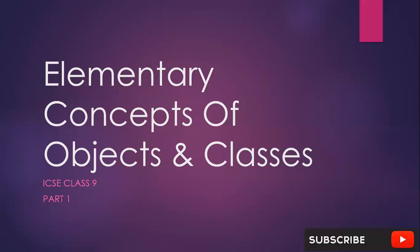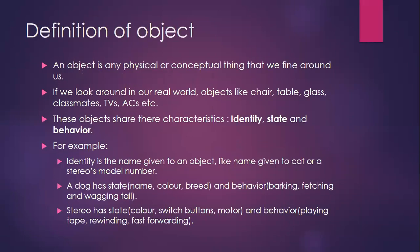Elementary concepts of objects and classes, part 1. This is for class 9. Definition of object: an object is any physical or conceptual thing that we can find around us in our real world. Things like chair, table, class, books, TVs, etc. — these are all objects we see in the real world. These objects share three common characteristics: identity, state, and behavior.